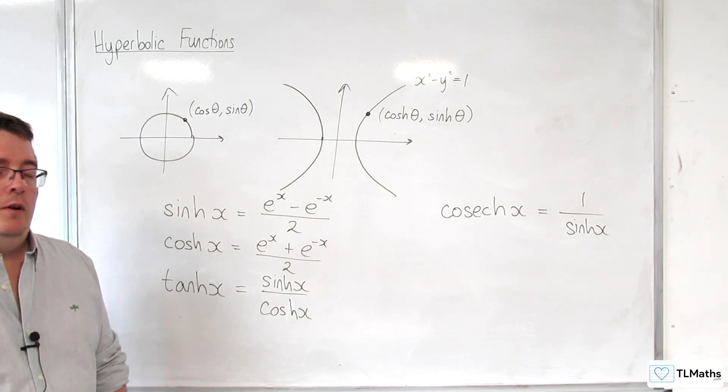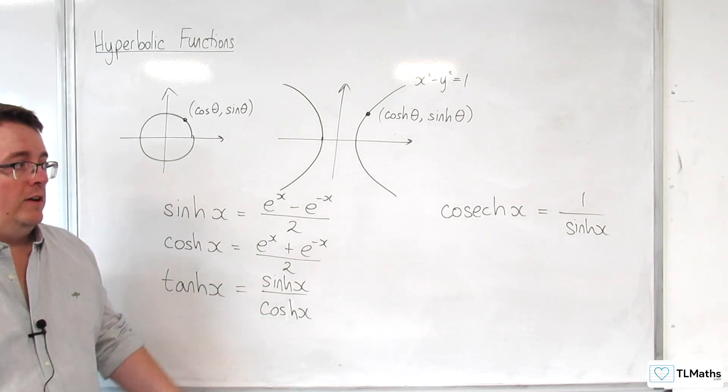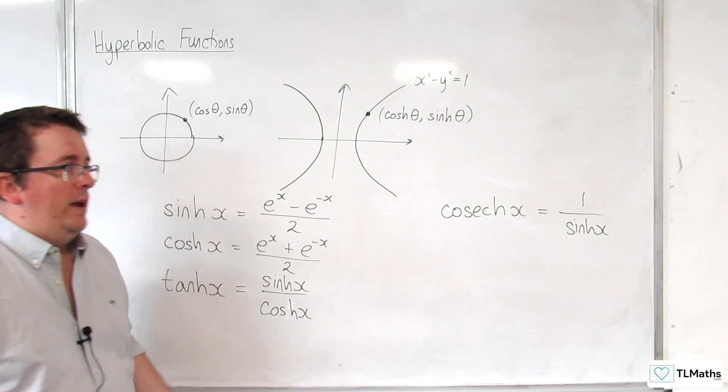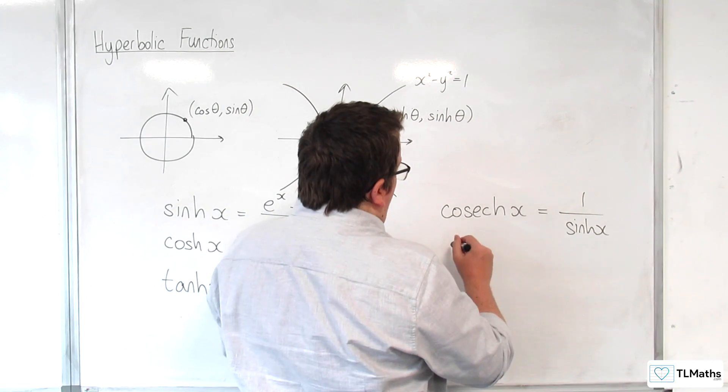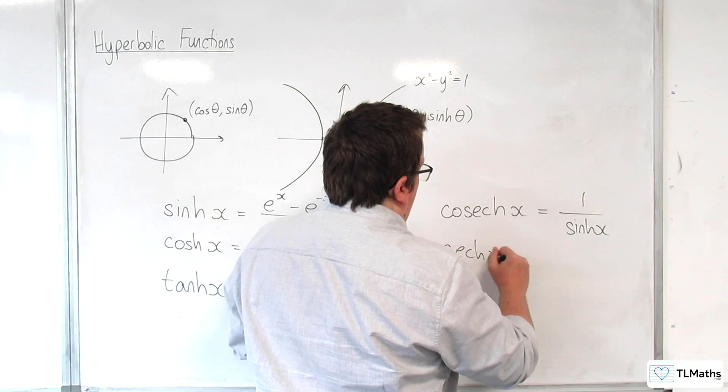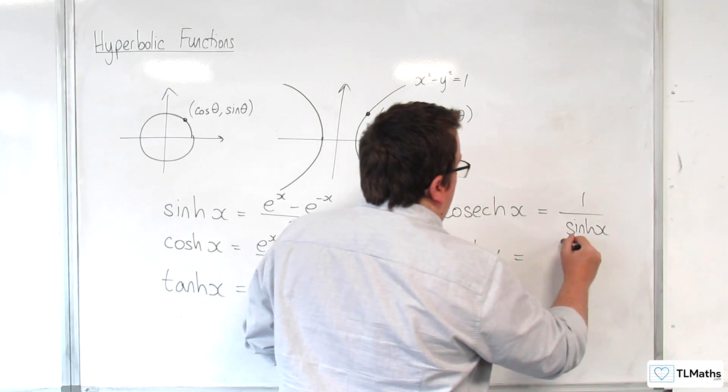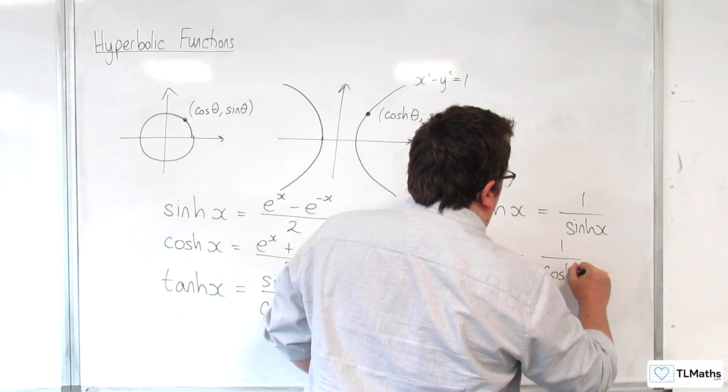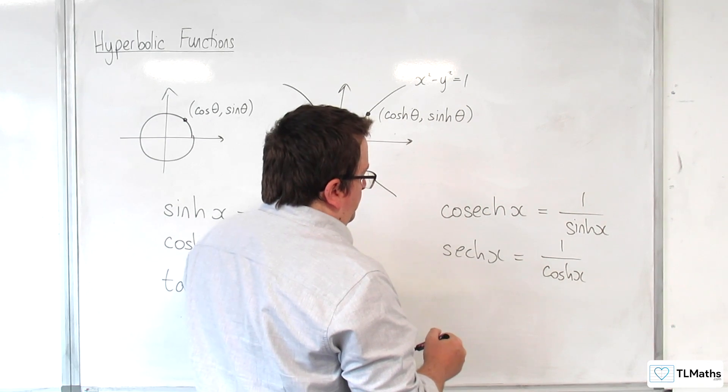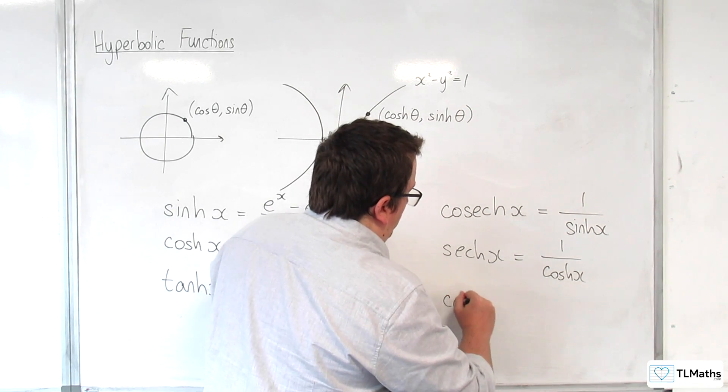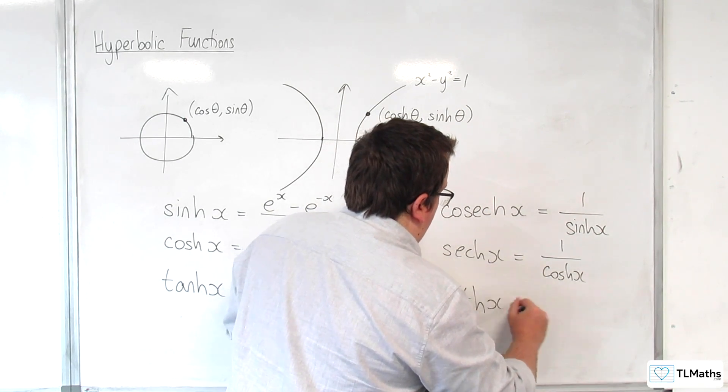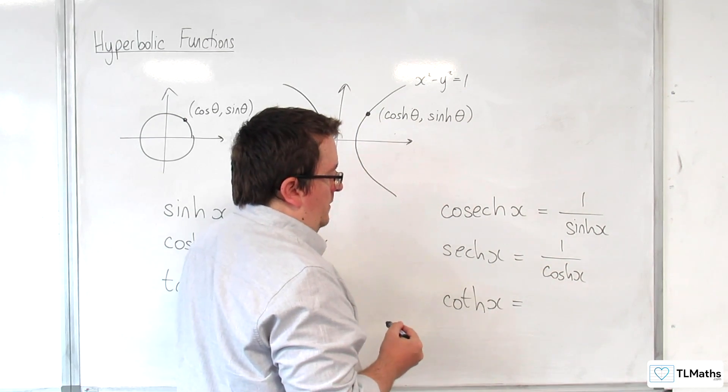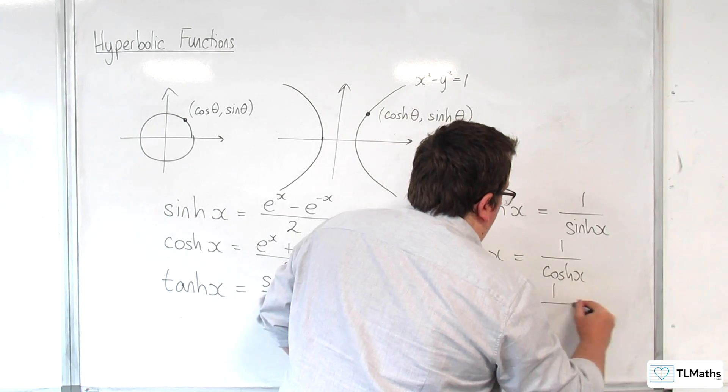So, you can see that there are very strong links with the trigonometry you know. So, sech of x is 1 over cosh of x. And then you've got coth, which is 1 over tanh.